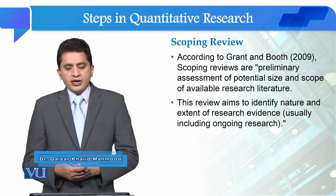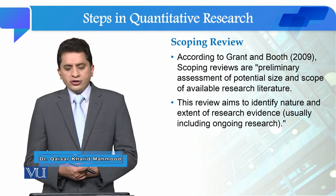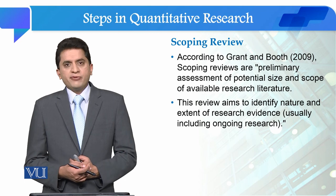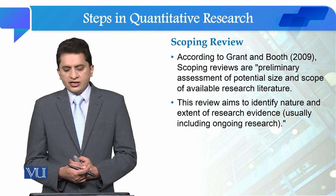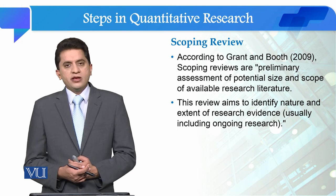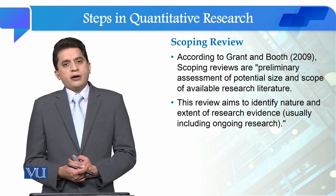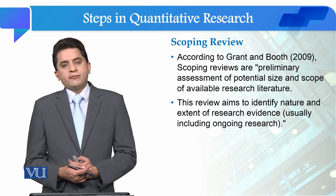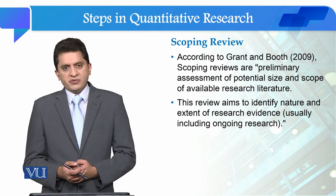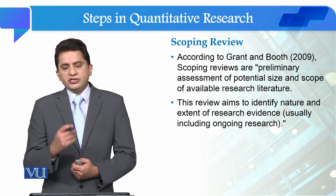According to Grant and Booth, scoping reviews are a preliminary assessment of the potential size and scope of available research in the literature. A scoping review is one of the initial assessments of available research.